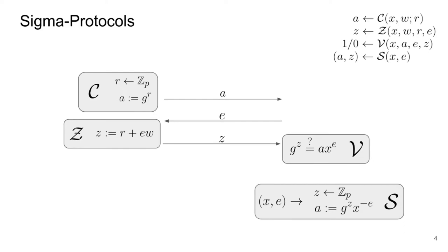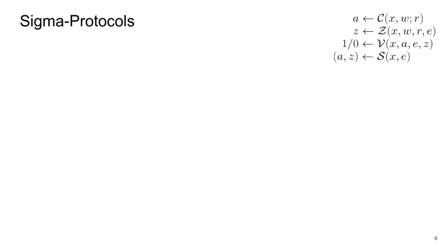One way to do so is to use the Fiat-Shamir heuristic, which consists of replacing the verifier by a hash function. In particular, a valid proof consists of an accepting transcript a, e, and z, where e is equal to the hash function evaluated on x concatenated with a. If the hash function H is modeled as a programmable random oracle, the resulting protocol is a non-interactive zero knowledge argument of knowledge.